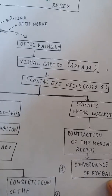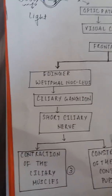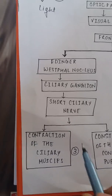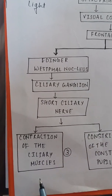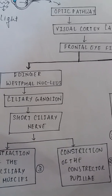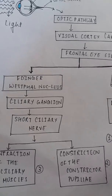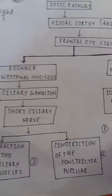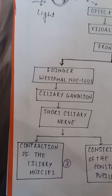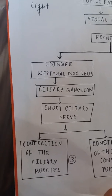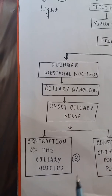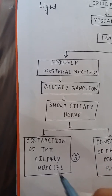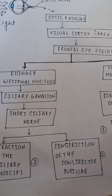So we get the three responses: constriction of the pupil, contraction of the ciliary muscles which causes an increase in the anterior curvature of the lens, and convergence of the eyeball.